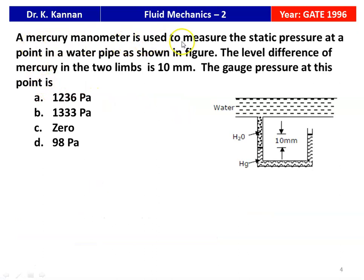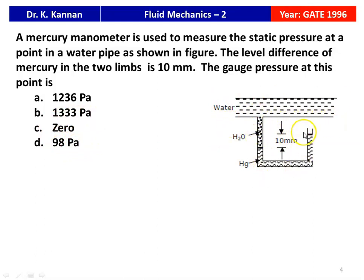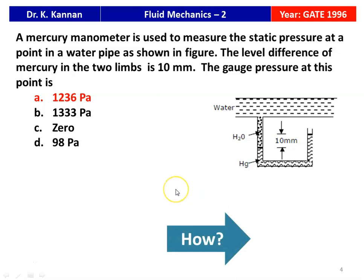The next question: a mercury manometer is used to measure the static pressure at a point in a water pipe. The level difference of mercury in the two limbs is 10 millimeters. The gauge pressure at this point is — options: 1236 Pascal, 1333 Pascal, 0 Pascal, 98 Pascal. This is a pipeline through which water is flowing, with a U-tube manometer using mercury as the manometric fluid; the head difference is 10 mm. The correct answer is 1236 Pascal, and we will see how in the next slide.